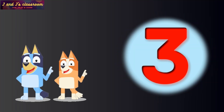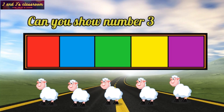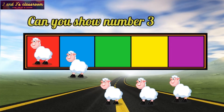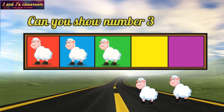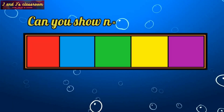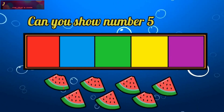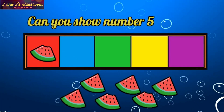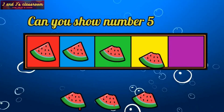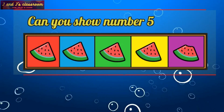Level 3. There are 5 sheep. Can you show number 3? 1, 2, 3. 3 sheep. Nice. Next, there are 7 pieces of watermelon. Can you show number 5? 1, 2, 3, 4, 5. 5 pieces of watermelon. Excellent.